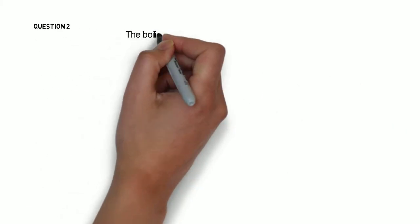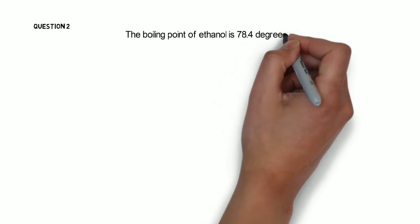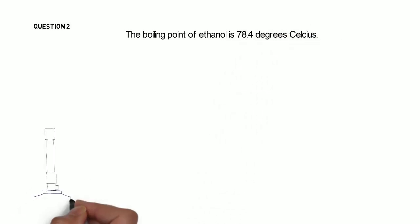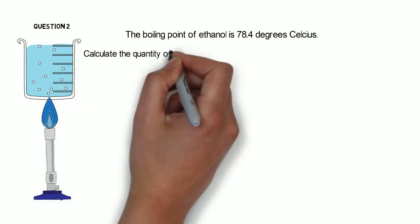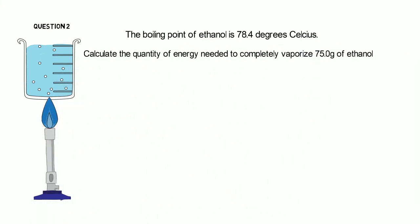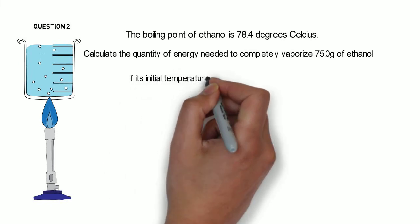Question 2: The boiling point of ethanol is 78.4 degrees Celsius. Calculate the quantity of energy needed to completely vaporize 75 grams of ethanol if its initial temperature is 78.4 degrees Celsius.